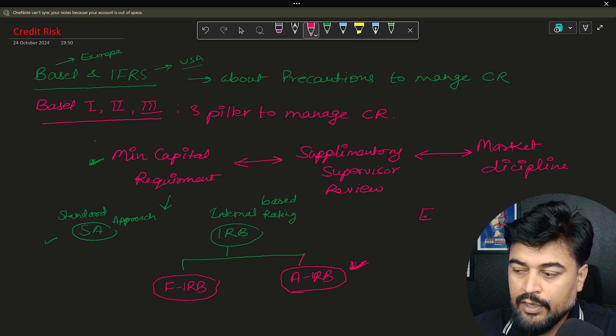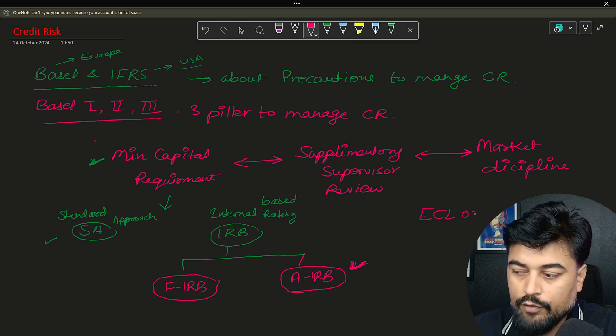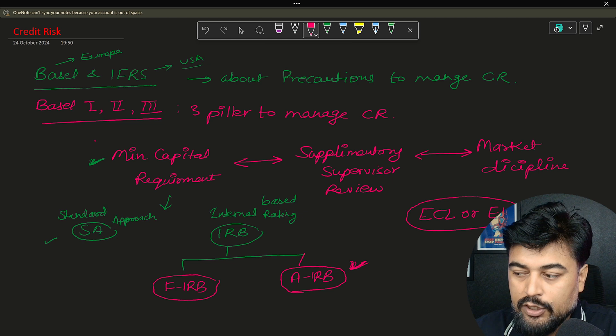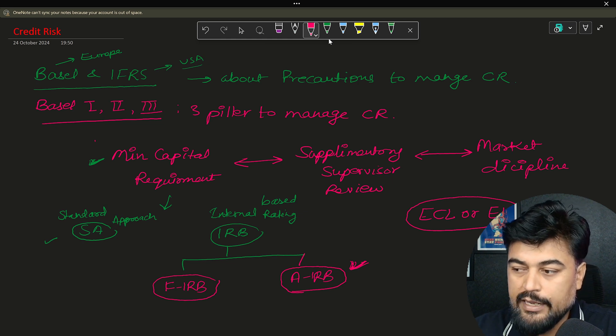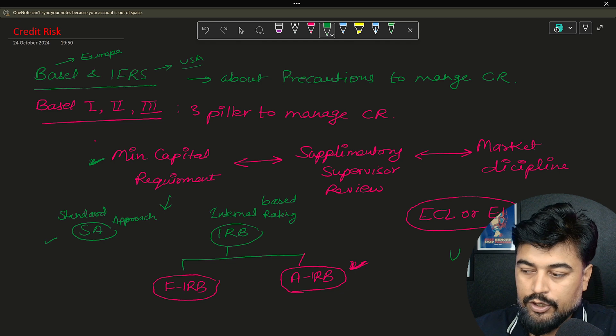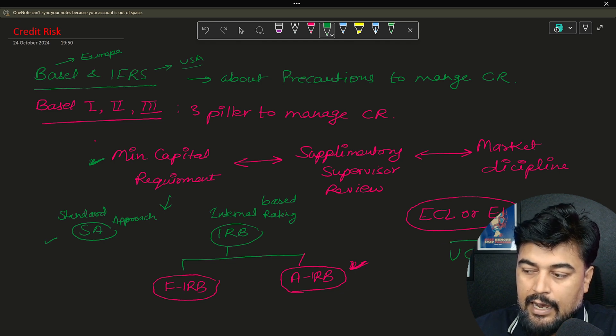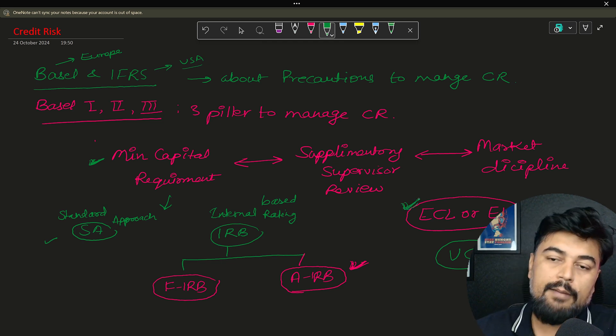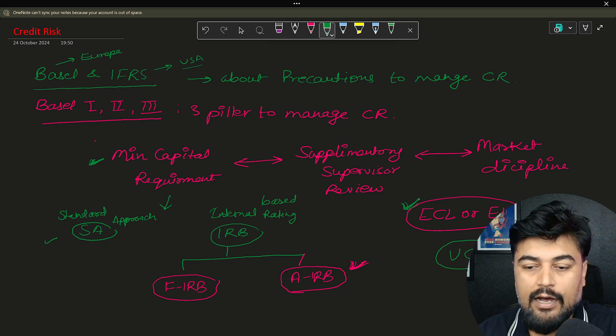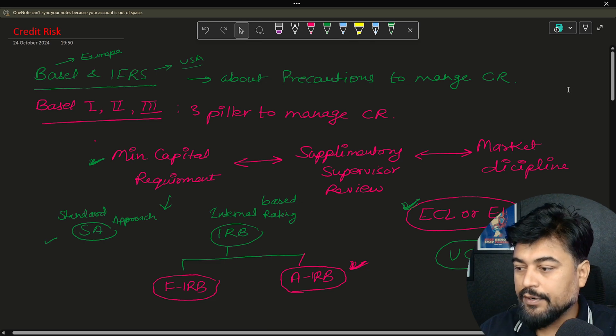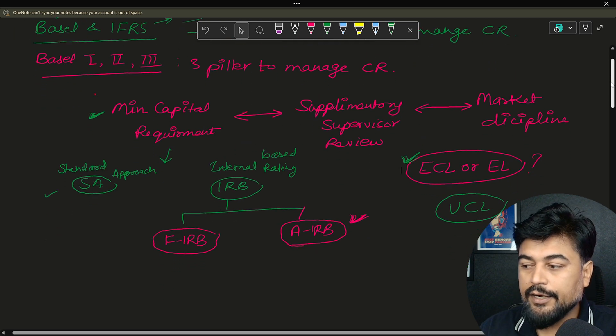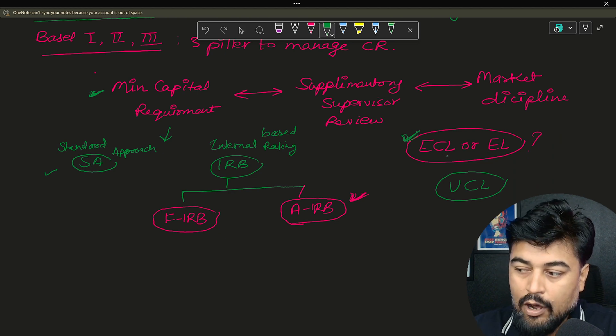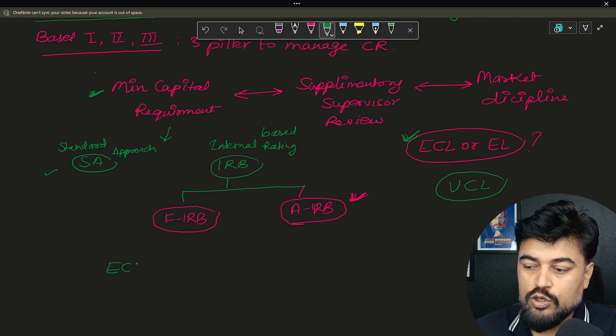Now one more thing which you should remember is that the main focus of all this setup what we are checking here is to calculate the ECL or we call it EL, and this is known as estimated loss. So losses are of two types: one is estimated loss, then UCL - that is unexpected.